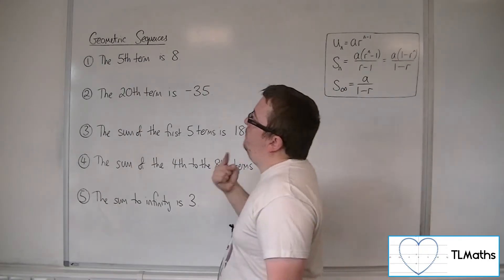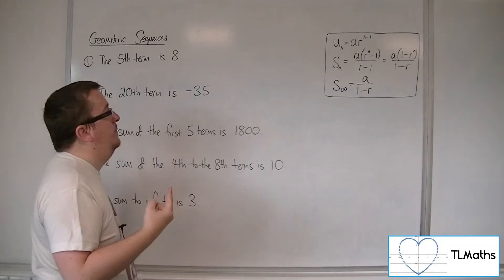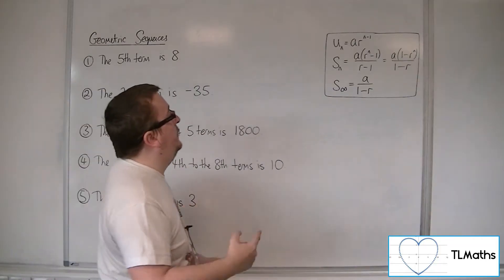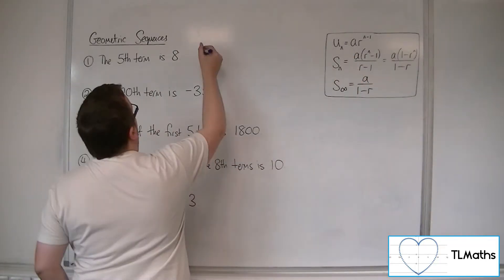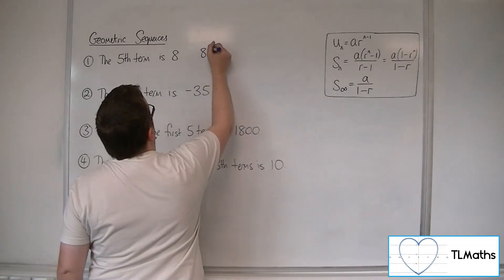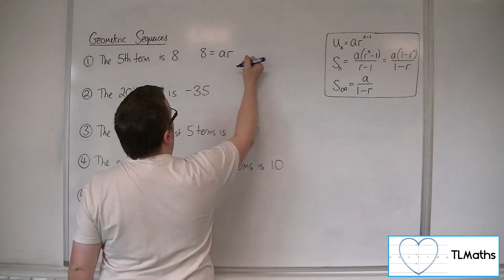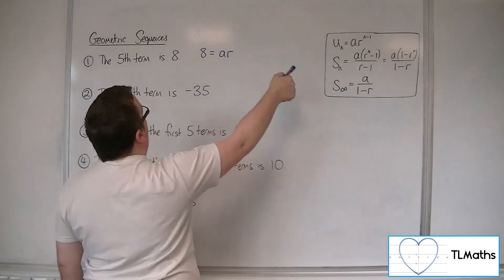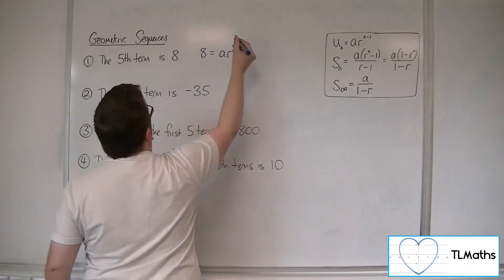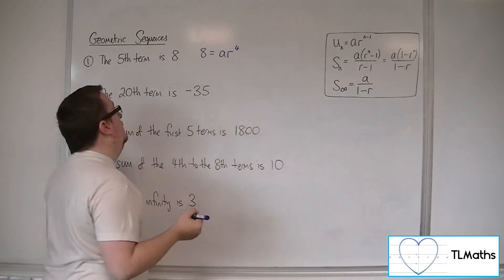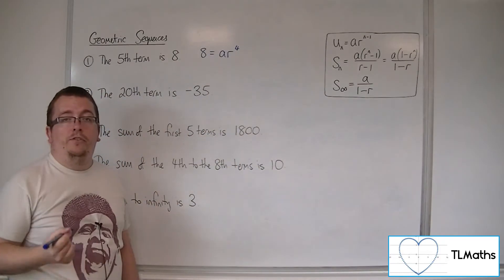If I'm told that the fifth term is 8, then I can say using this formula here that 8 must be the first term a times r to the n minus 1. So 5 take away 1, which is 4. So 8 equals ar to the 4.